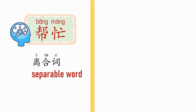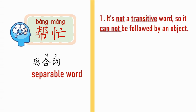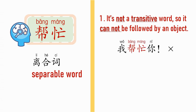First, 帮忙 is not a transitive word, so it cannot be followed by an object. 比如说,我帮忙你 — 不对, it's wrong. Don't worry, I'm going to explain more. Second, it can be separated. Now let's analyze deeper.